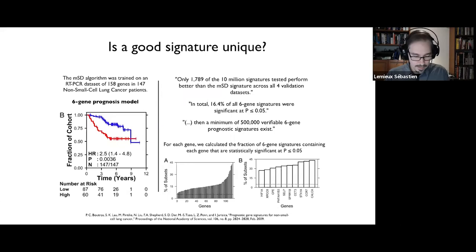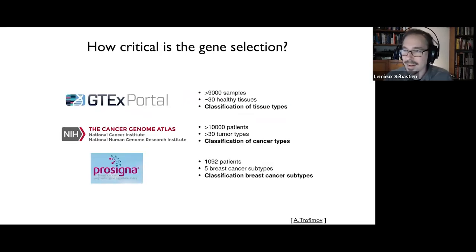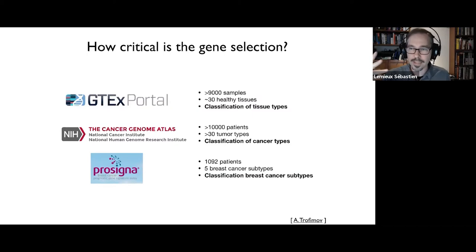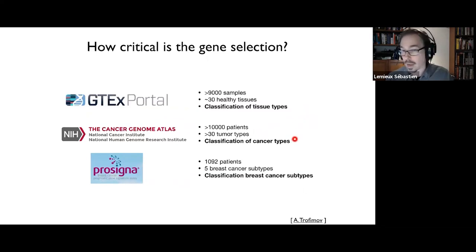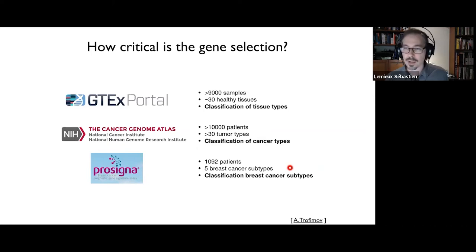A student in the lab, Asia Trafimov, decided to do something a bit crazier. She put together three datasets with three different prediction classes: GTEx with 9,000 samples and 30 tissue types, predicting tissue of origin; TCGA with about 10,000 samples and 30 tumor types, predicting cancer type; and a subset of breast cancer within TCGA with about 1,000 patients in five breast cancer subtypes, predicting which subtype. She decided the conclusion should not be algorithm-specific, so she applied three baseline algorithms: k-nearest neighbor, random forest, and regularized logistic regression.